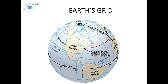A coordinate system consists of lines of latitude and longitude. Lines of latitude and longitude form a grid that measures distance from a reference point. This session focuses on the grid system of our Earth in detail.